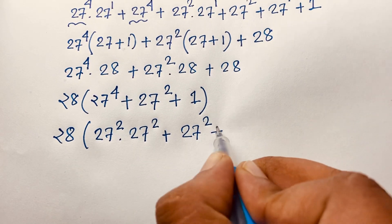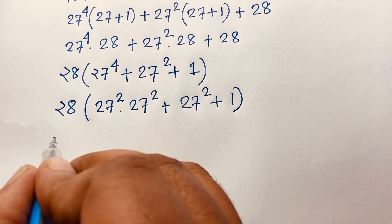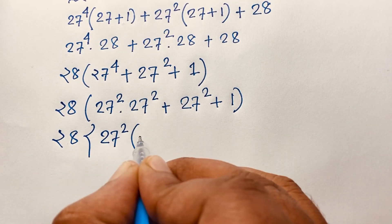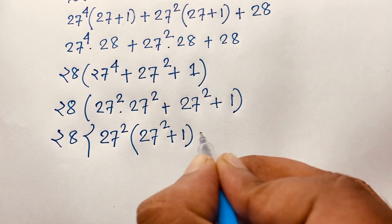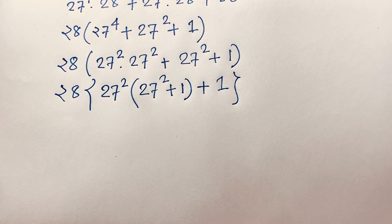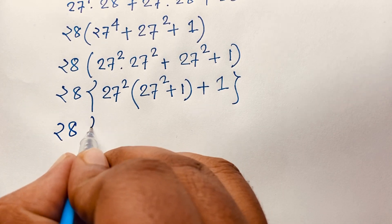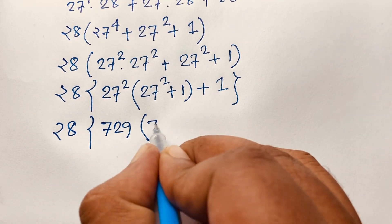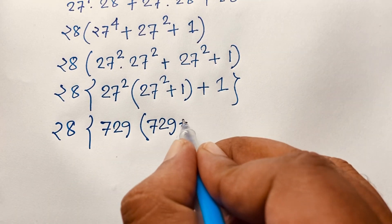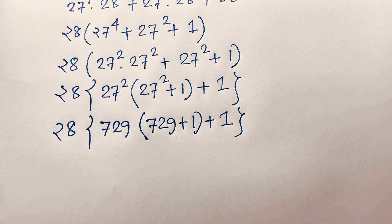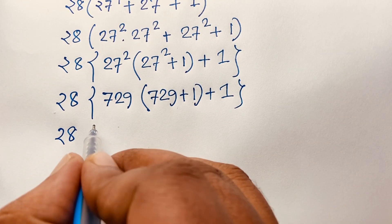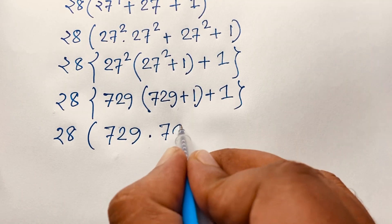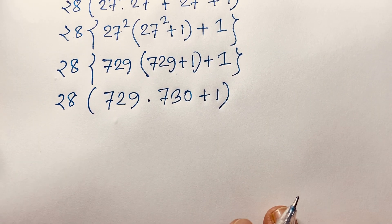Now you can see here 28, and in this expression 27 power 2 is common. So dividing through, we get 27 power 2 times (27 power 2 plus 1) plus 1. Now 27 power 2 equals 729, and 27 times 27 is also 729. So we have 28 times 729 times 730 plus 1.